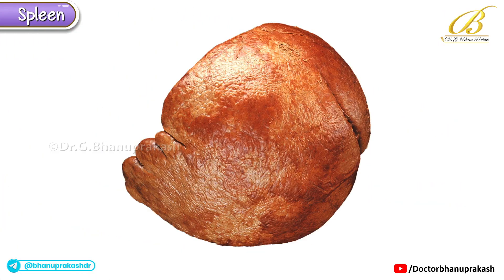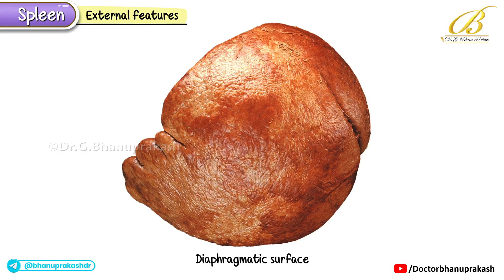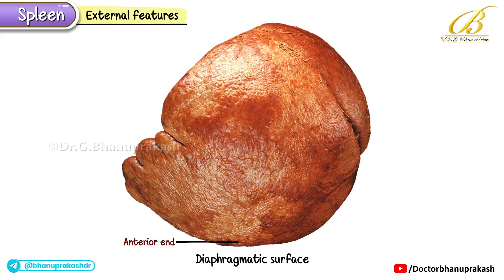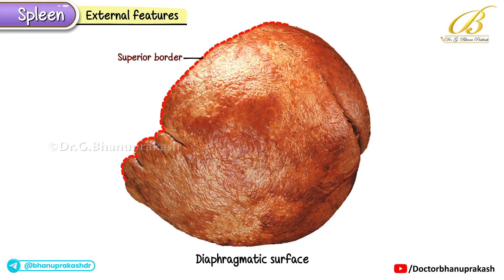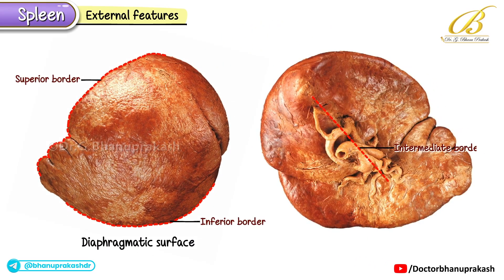Now let's look at the external features of the spleen. What you're seeing in this image is the diaphragmatic surface of the spleen — the smooth convex side that lies directly against the diaphragm. The spleen has two ends, an anterior end and a posterior end. It also has three borders: superior, inferior, and intermediate.